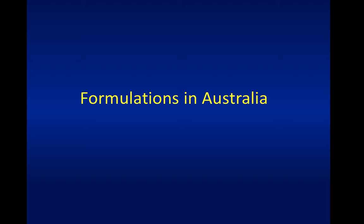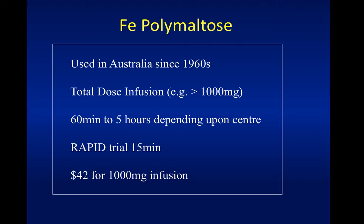In Australia there are three formulations available, although only two are commonly used. The most commonly used and longest available is iron polymaltose. When first introduced in the 1960s it was primarily given intramuscularly, which is why it comes as small 100 milligram ampoules - making it a bit of a pain to draw up the 1,000 to 1,500 milligrams needed for an infusion. Traditionally given over five hours, it is now more commonly given over 60 to 90 minutes. A study in 100 gynaecology patients showed it could be safely given in theatre over 15 minutes. Its main advantage is it is well tolerated with low incidence of side effects and is very cheap - approximately $40 for a thousand milligrams.